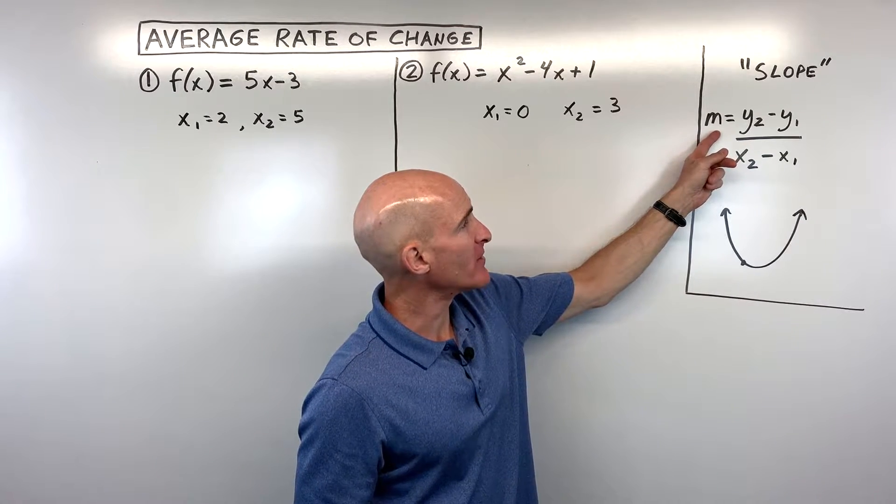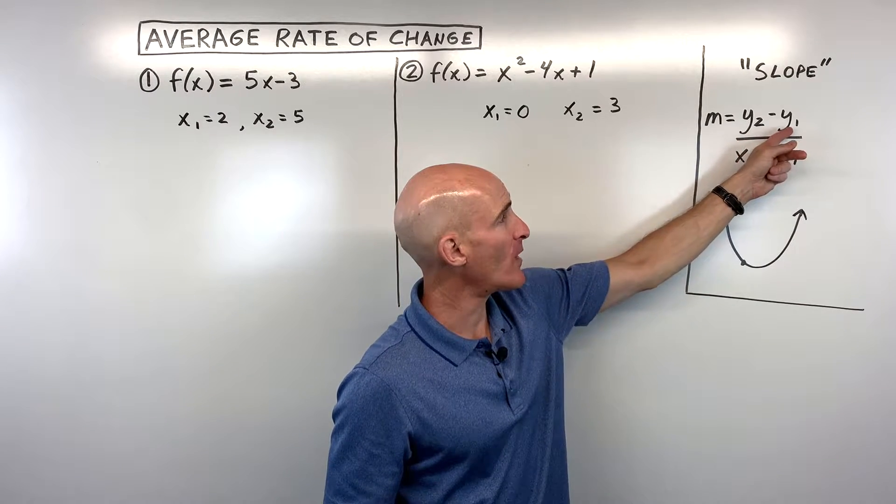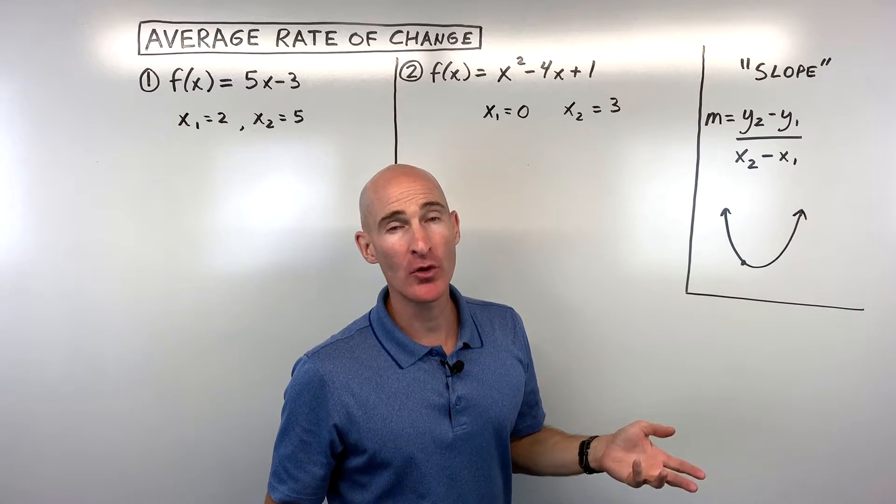And remember from Algebra 1, the slope is the change in y over the change in x, or you can use this formula y2 minus y1 over x2 minus x1.